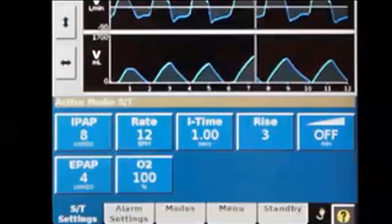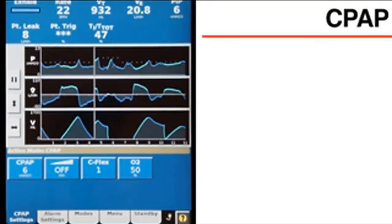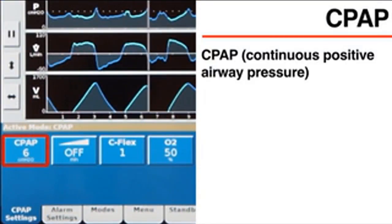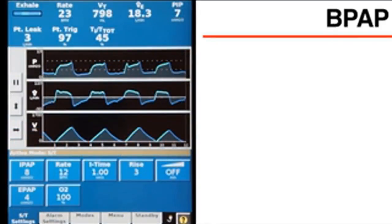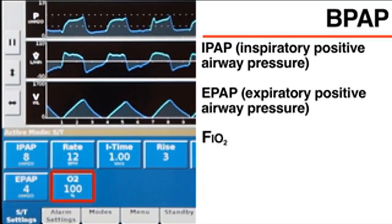The available settings depend on the mode. In CPAP mode, the basic settings include CPAP itself as well as FiO2. In BPAP mode, the basic settings include IPAP, EPAP, and FiO2.